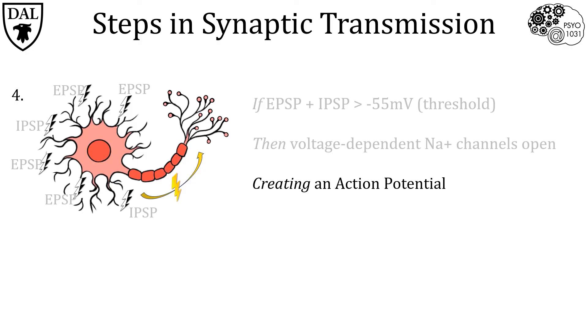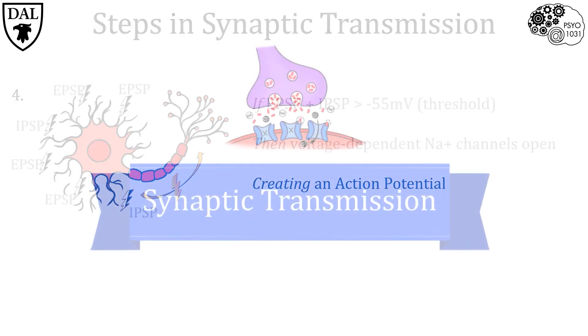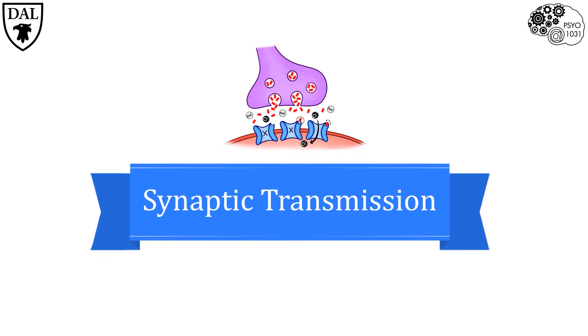This action potential allows the neuron to send its message to its targets. Overall, synaptic transmission may seem quite tricky, but it's actually quite simple once you know the basics.